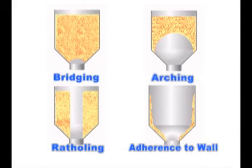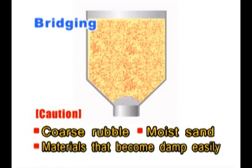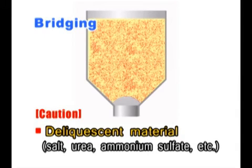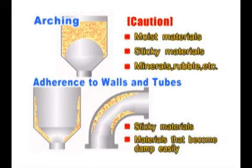Causes of blockage, in addition to rat holes, vary according to the shape of the tank and materials being handled. A phenomenon called bridge is common when the exhaust port in a tank is small. One must be especially careful with sand that has high moisture or materials that easily become damp. Salt and urea can also cause this problem, because these materials tend to harden during periods of high humidity, so special caution is required. In addition, arching and attachment to walls tend to occur with the materials you see here.